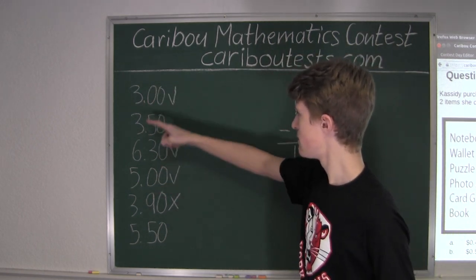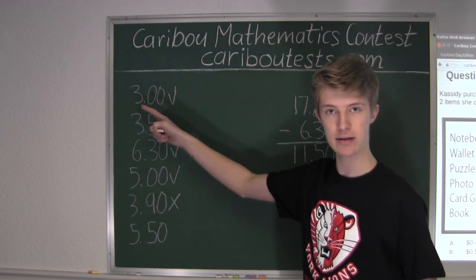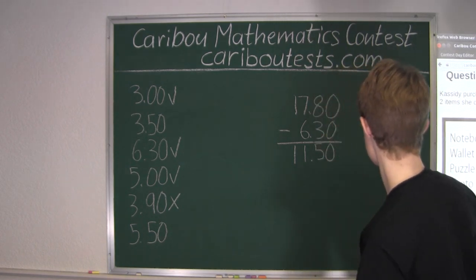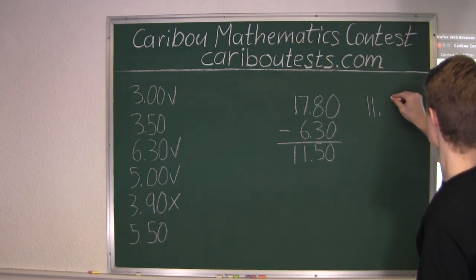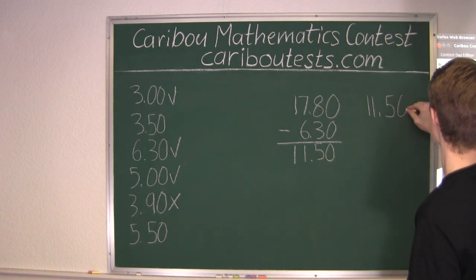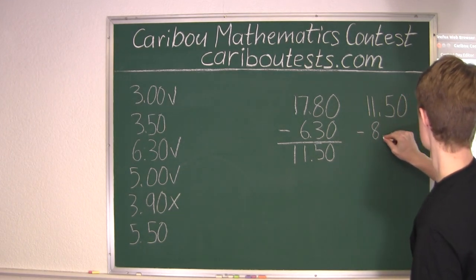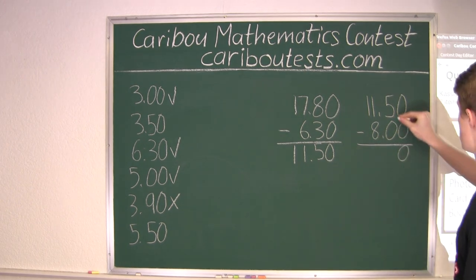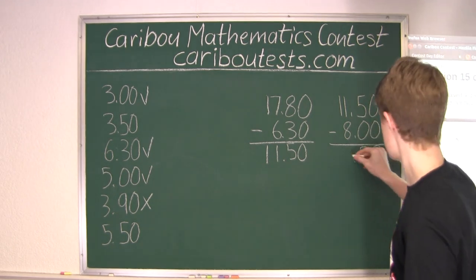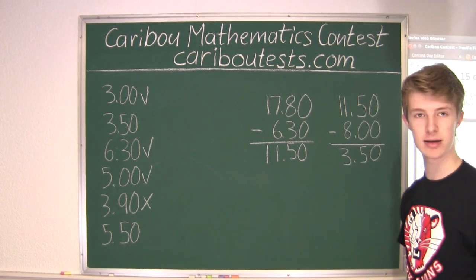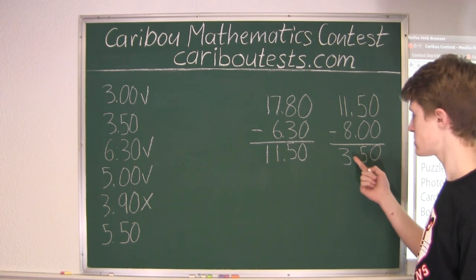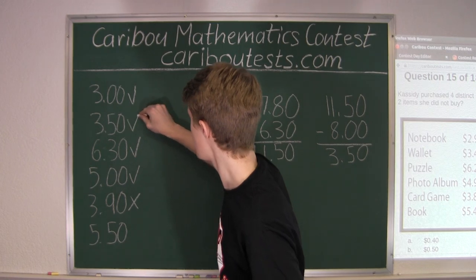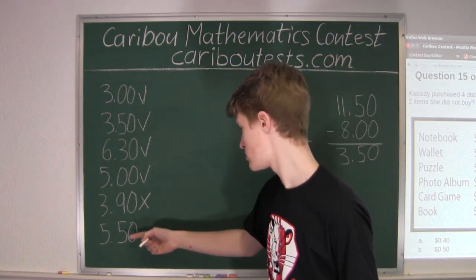Now, since she purchased those, $3.00 plus $5.00 is $8.00. And now, $11.50 minus $8.00. We will write over here, $11.50 minus $8.00. That is $0.50, and $11.50 minus $8.00 is $3.50. Therefore, the last item that she purchased must have been the item for $3.50, which is right here. Therefore, she couldn't have purchased this item.